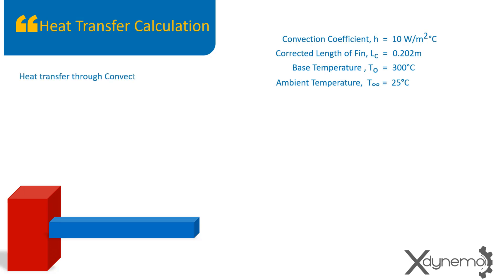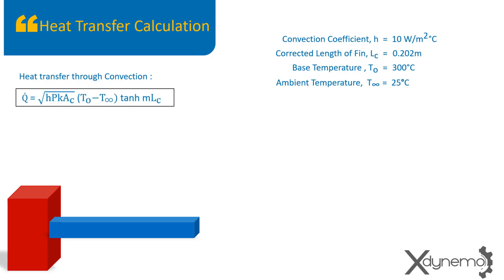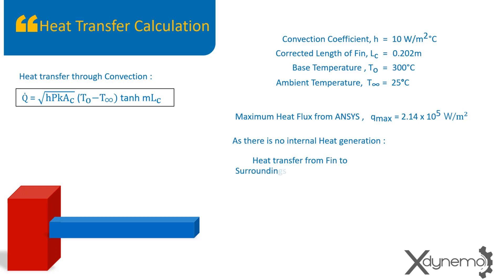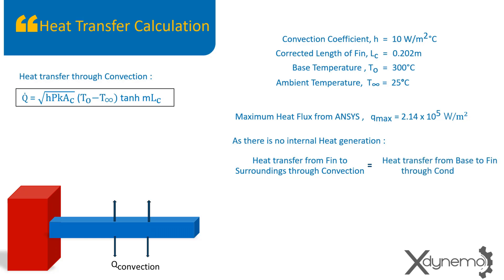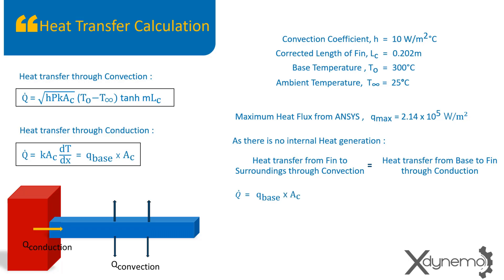Let us calculate the rate of heat transfer using heat flux results from ANSYS. We have already performed the theoretical calculation of heat transfer through convection from fin surface to surroundings. The maximum heat flux from ANSYS results is 2.14 × 10⁵ Watt per meter square. As there is no internal heat generation, heat transfer from fin to surroundings through convection equals heat transfer from base surface to fin through conduction. The formula is: heat flux at base multiplied by cross-section area of the fin. Substituting these values, the rate of heat transfer is obtained as 32.10 watts.